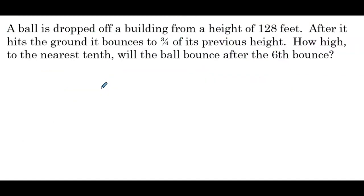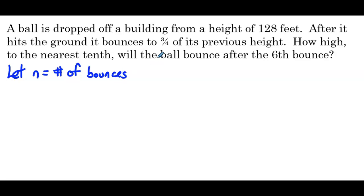A ball is dropped off a building from a height of 128 feet. After it hits the ground, it bounces to three-fourths of its previous height. How high to the nearest tenth will the ball bounce after the sixth bounce? We're going to let n be equal to the number of bounces. After each bounce it goes to three-fourths of its previous height, so we multiply by three-fourths each time — that's a common ratio. So we have a geometric sequence with a common ratio of three-fourths.